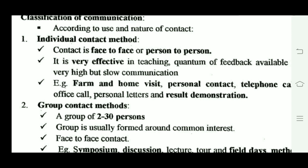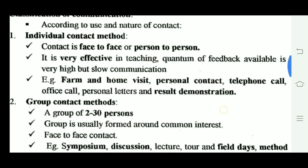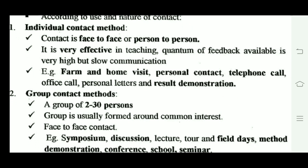Individual contact method involves one-on-one, face-to-face contact. This contact method is good for feedback and is effective, but communication is slow and coverage is limited. Examples include farm and home visits, personal contact, and telephone calls.